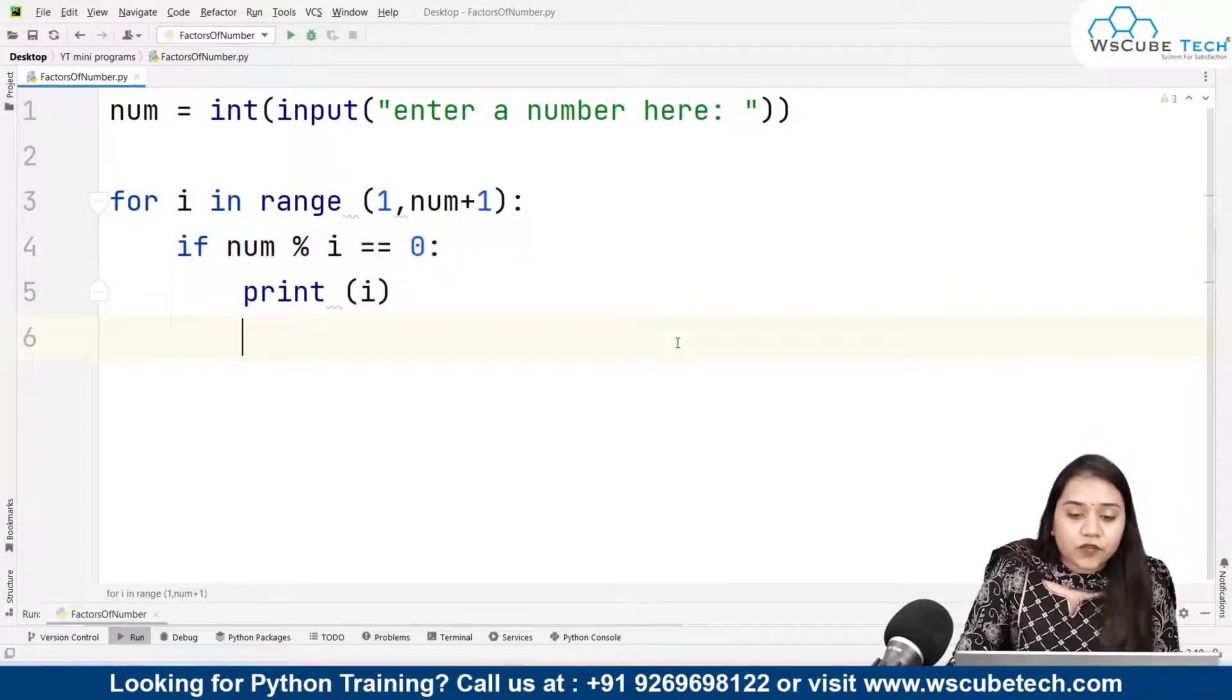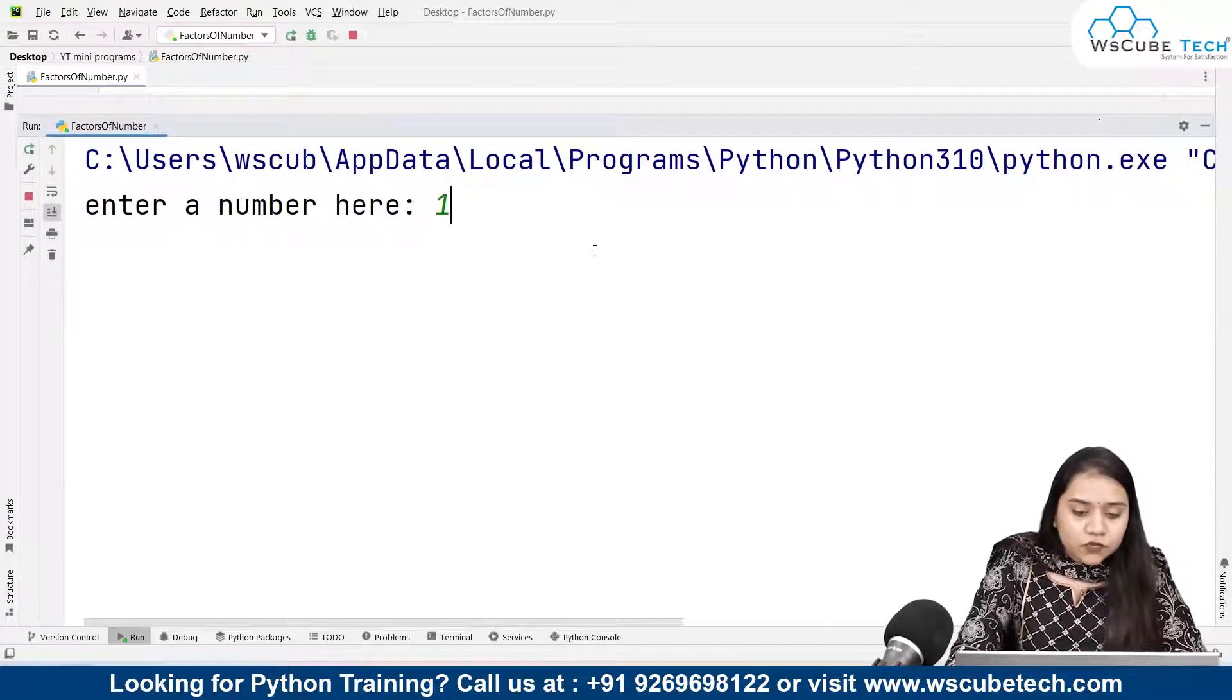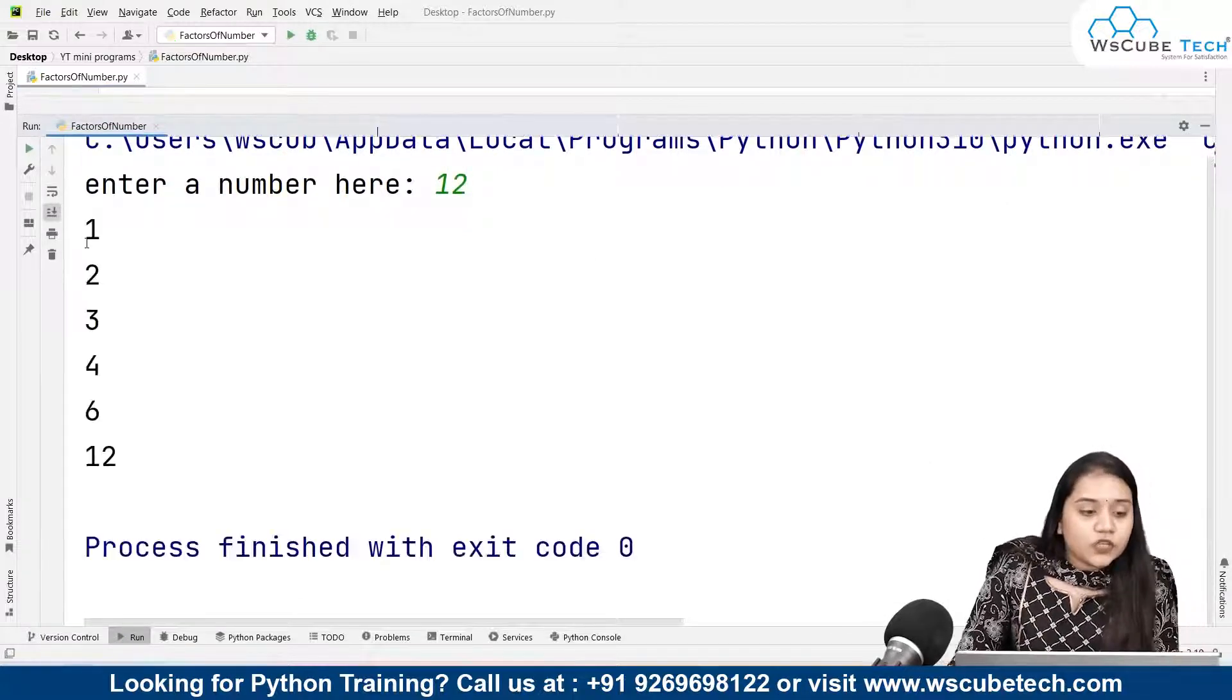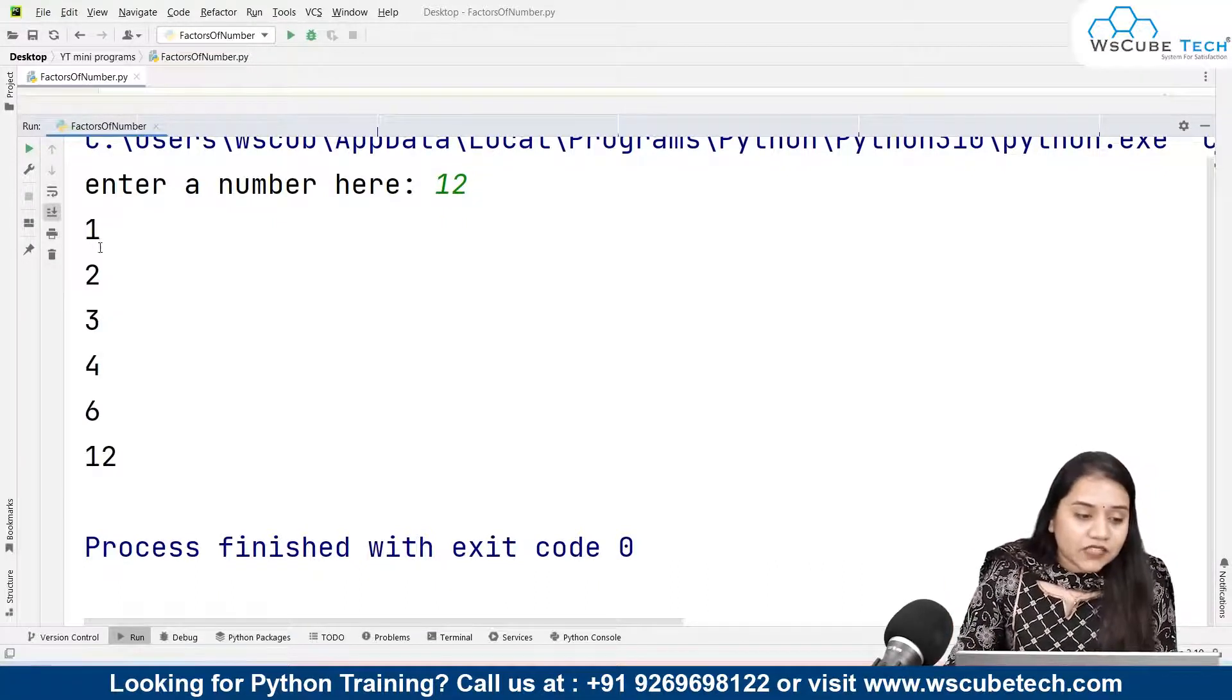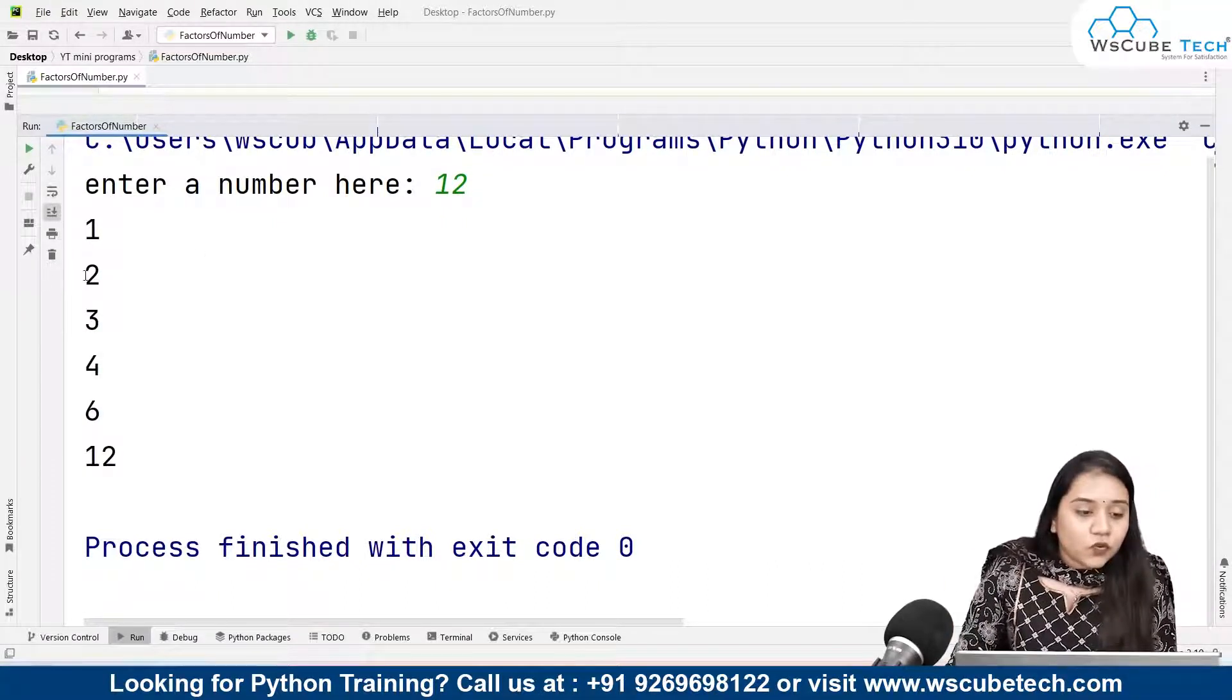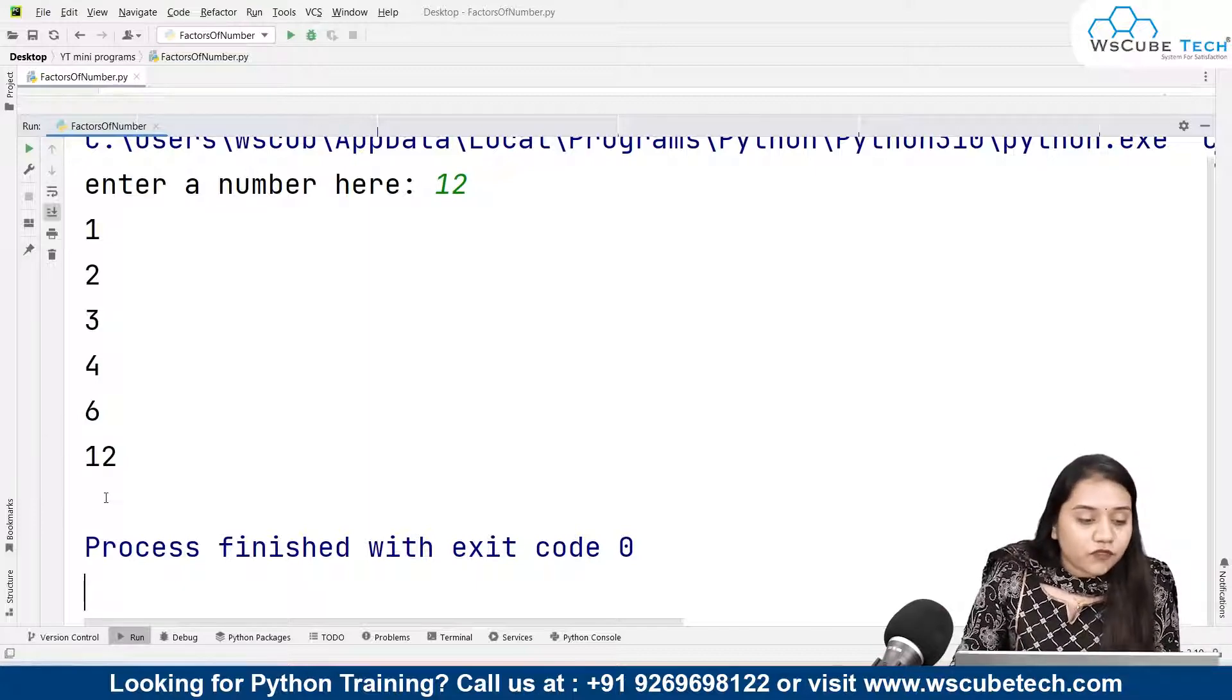For example, if I run this program and if I write 12 and run it, it will give me all the numbers in which the 12 number comes in the table. For example, 1 times 12 is 12, 2 times 6 is 12, 3 times 4 is 12, 4 times 3 is 12, 6 times 2 is 12, and lastly 12 times 1 is 12. That means all the factors of number 12 are here.